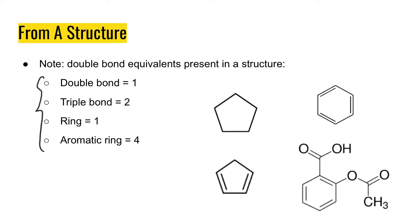If you have a double bond, then its double bond equivalent is 1. If you have a triple bond, it's like having two double bonds, so its double bond equivalent is 2. A ring is considered to be a double bond equivalent of 1, and an aromatic ring is a double bond equivalent of 4, because you have three double bonds plus a ring.